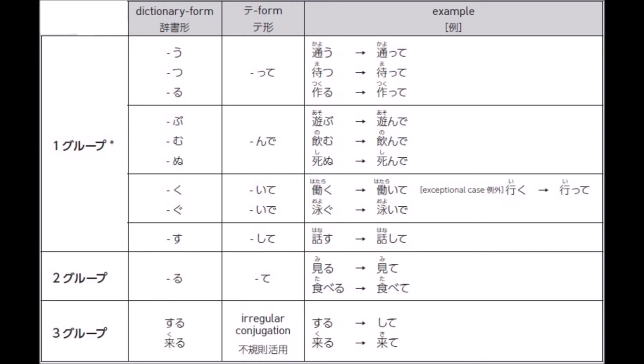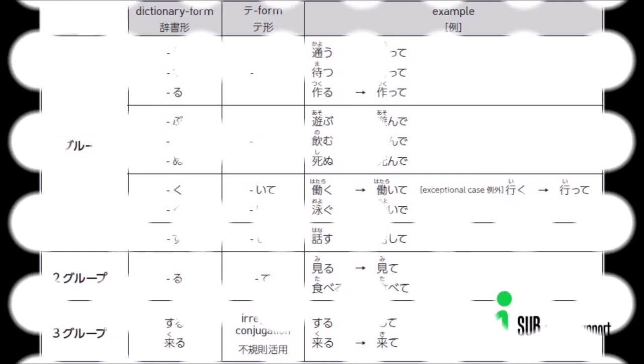For ku and gu endings, they become ite or ide — hataraku → hataraite. Exception: iku → itte. Oyogu → oyoide, meaning 'swim.' For group 2 verbs ending in ru, simply replace ru with te — miru → mite, taberu → tabete. For irregular verbs: suru → shite, kuru → kite. For example: benkyou suru → benkyou shite; tabe ni kuru → tabe ni kite.